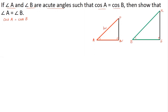In triangle AQP, AP is the hypotenuse, PQ is the opposite side of angle A, and AQ is the adjacent side with respect to angle A. In triangle BSR, BR is the hypotenuse, RS is the opposite side of angle B, and BS is the adjacent side with respect to angle B.